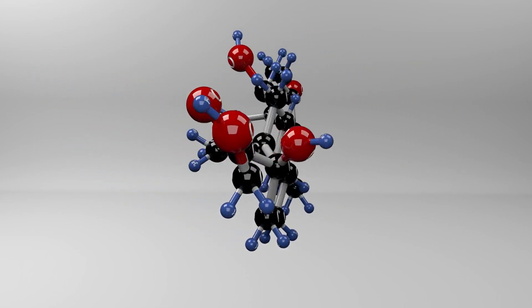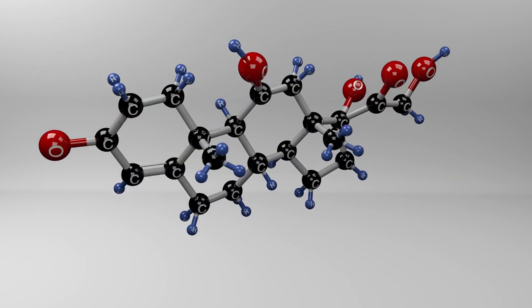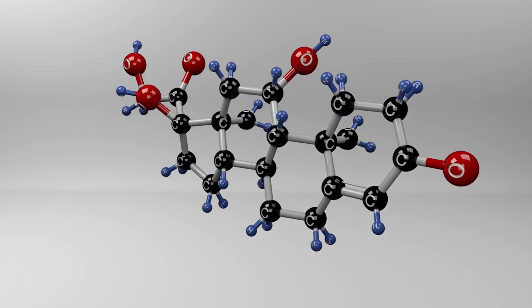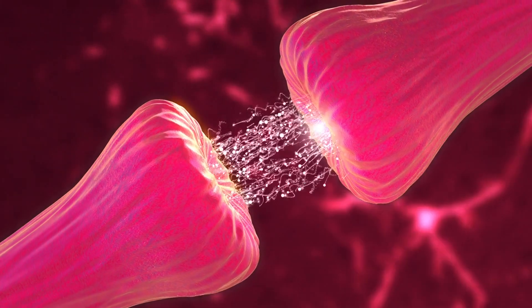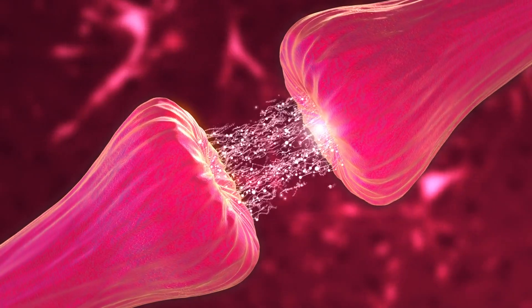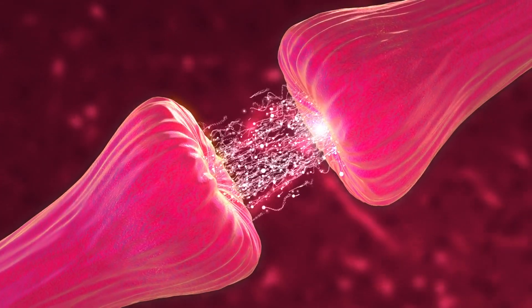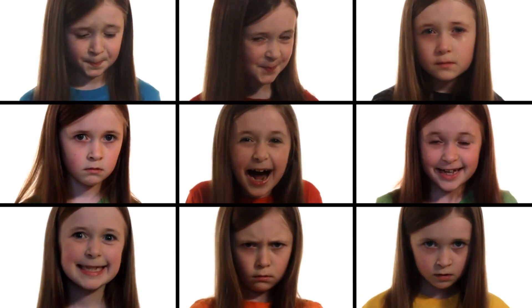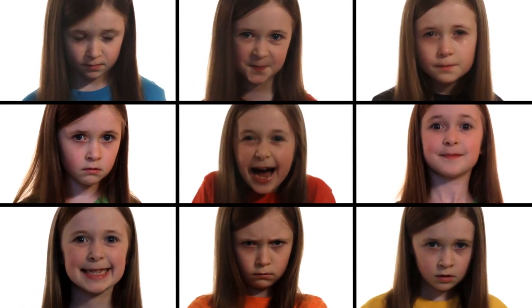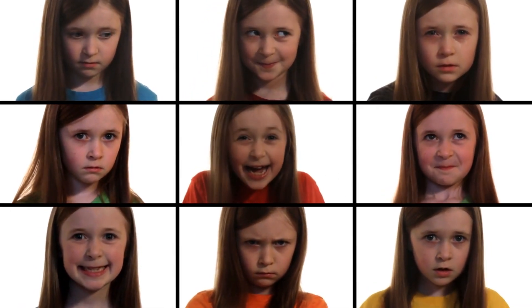Cortisol, often referred to as the stress hormone, helps the body manage stress by regulating metabolism and immune responses. The balance and interaction of these chemicals significantly impact our behavior, from how we handle stress to how we experience pleasure. Understanding these processes helps us better grasp the biological foundations of our actions and emotions.